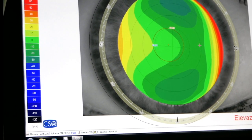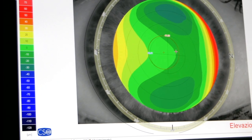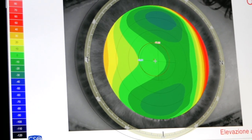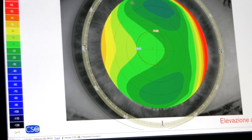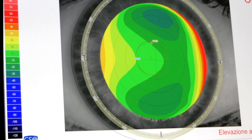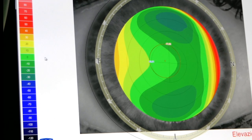We have to imagine that a computer takes the mean curvature radius of the cornea, builds an ideal sphere that represents green, which is the average of the curvature of the cornea.